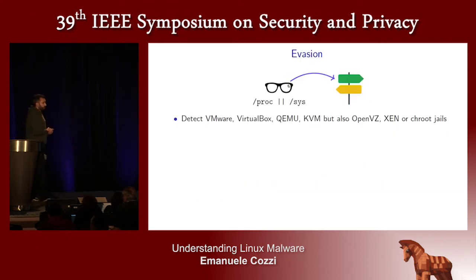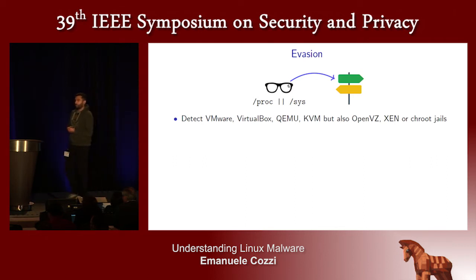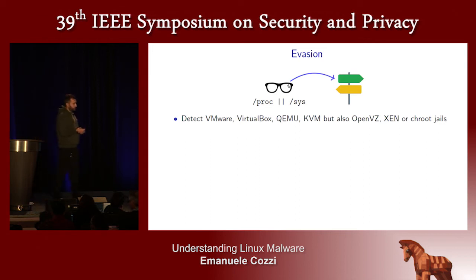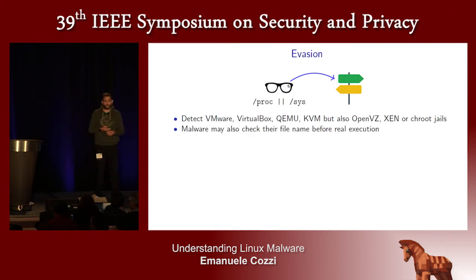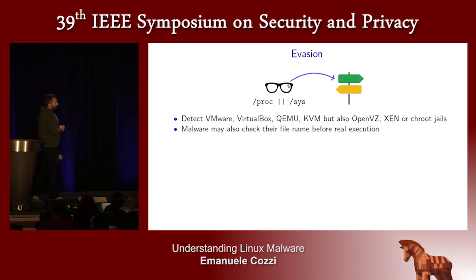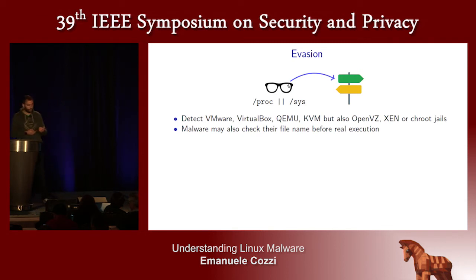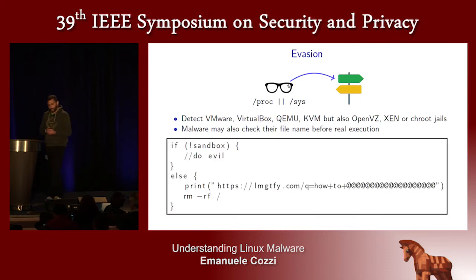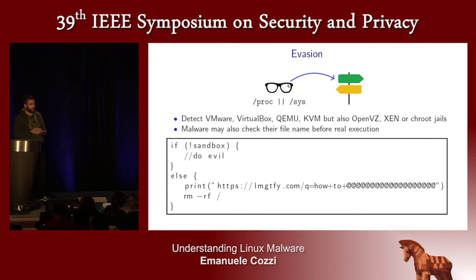They are also doing evasion — the ability to detect analysis environments — which is really common on Windows and is now happening on Linux as well. They check the /proc and /sys virtual filesystems to detect virtualization and emulation solutions. They also use a simple but effective trick: checking if the file has been renamed, because they know that when researchers receive samples from feeds, the filename is typically changed to the hash of its data. If the name has been changed, they may suppress the original behavior partially or totally. Some Linux malware even leave funny messages if they detect an analysis environment, with one family completely wiping the hard drive.